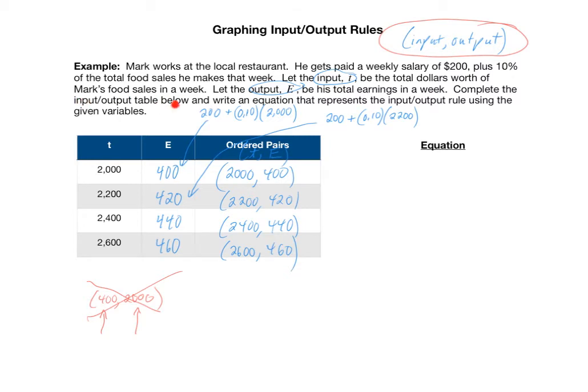So we represented the input-output rule in table form. Let's now do it in equation form. We need to generalize this idea from these computations. Our amount of total earnings E is equal to, well, no matter what, he gets paid that $200 first. Then he adds on 10%, that's in all the computations, of the amount T. So we're going to multiply the 10% by T. So this is our input-output rule. And notice the input-output rule uses the appropriate variables. I did not change that to X and Y. X and Y are not defined here. It's T and E. So the output E is equal to 200 plus 0.10 times T.